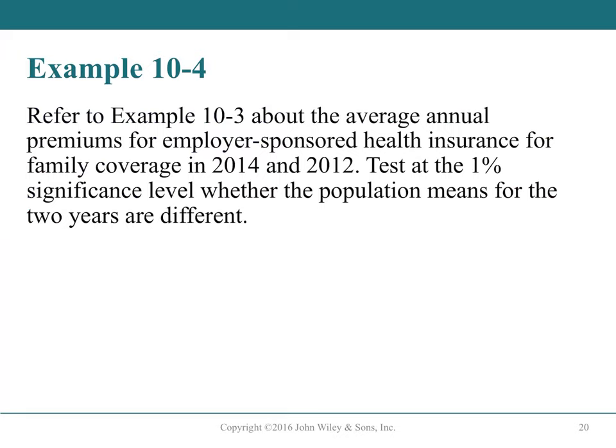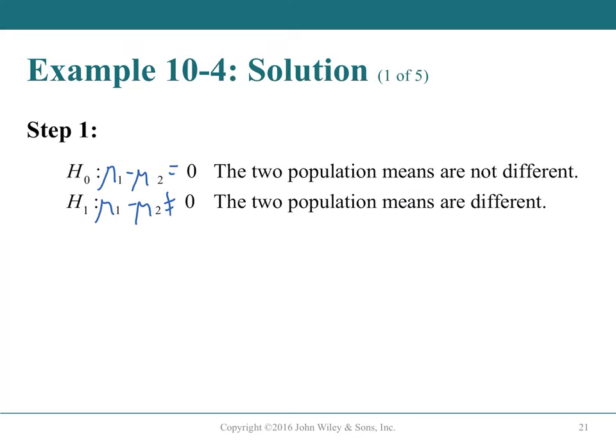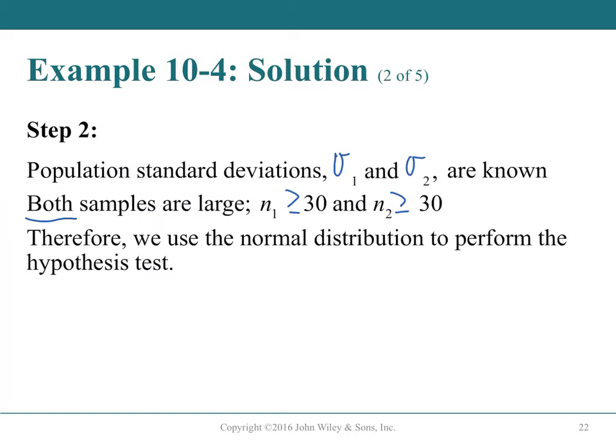Testing the health insurance data at α = 0.01: H₀: μ₁ - μ₂ = 0, H_A: μ₁ - μ₂ ≠ 0. Population standard deviations are known, both samples are large, so the normal distribution applies. The not-equal sign in H_A indicates a two-tailed test. Put the equals sign in H₀ and all emphasis on H_A.